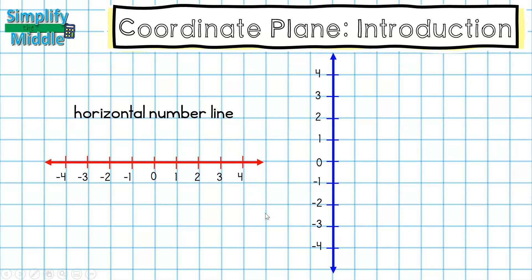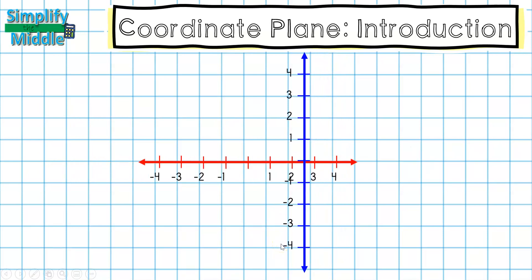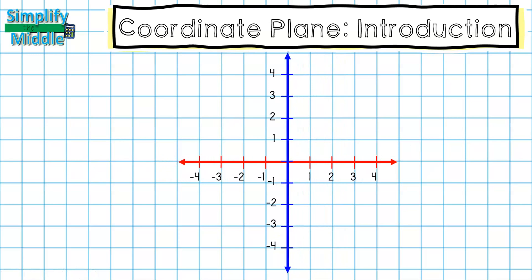Our next type of number line is our vertical number line, and this number line looks a lot like a thermometer, or we can think of it in terms of elevations. But what happens if we were to combine our number lines? This is actually something completely different.